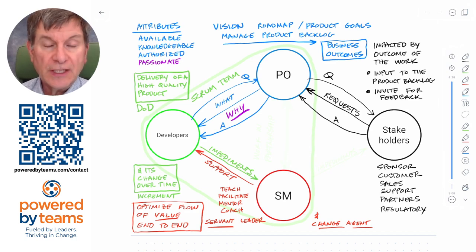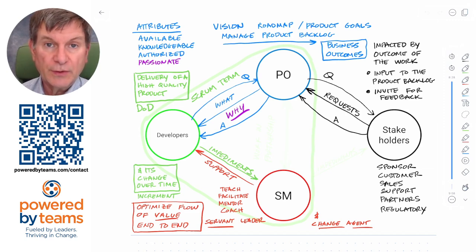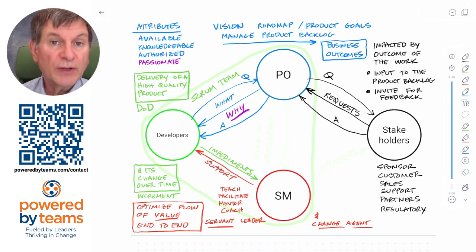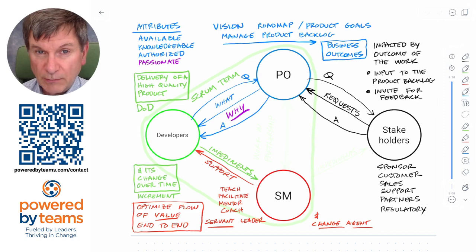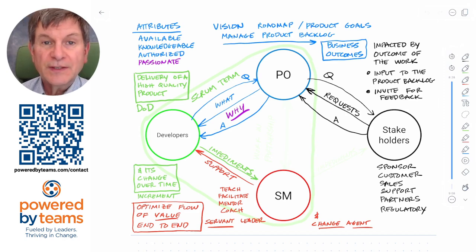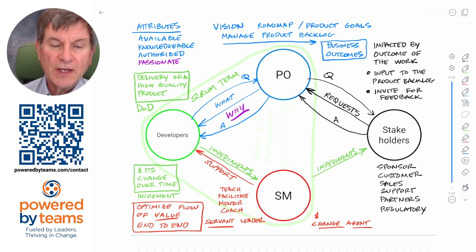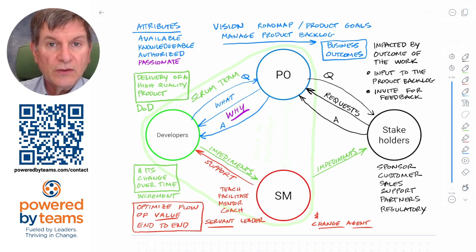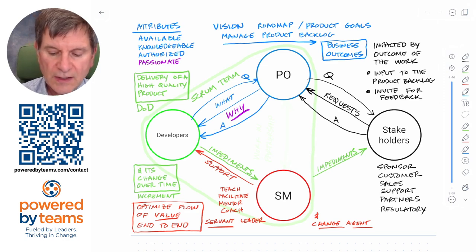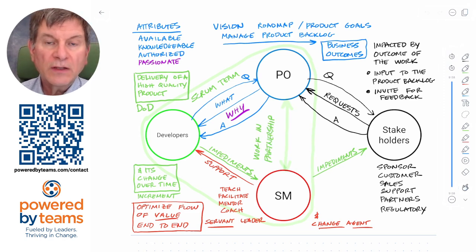Think of the Scrum Master like the coach of a sports team — they probably don't get on the field and play. The team owner probably doesn't get on the field either — that's like the product owner. It's the developers who are playing the game. Would you want your coach coaching more than one team? Probably not. The impediments arrow goes from the Scrum team — not just the Scrum master — to outside, because these accountabilities are designed to work in partnership to deliver increments of value every single sprint.